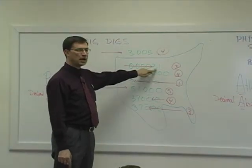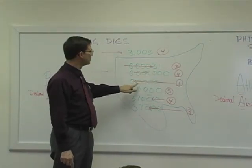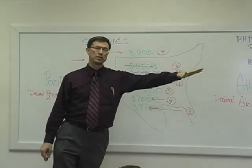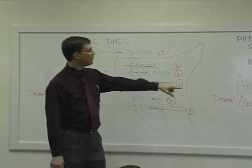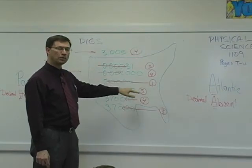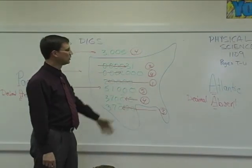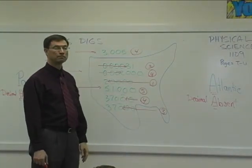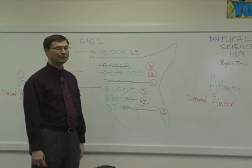Until it hits the first non-zero digit and then it gets lodged there, and you count the rest of the digits as being significant. If it's absent, it's coming from the Atlantic and pops the zeros until it gets stuck, and then again you count. Hopefully you got it all right. Thanks.